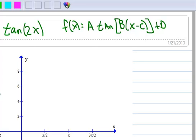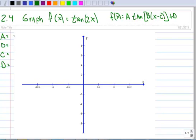The first thing you want to do is identify your A, B, C, and D. So A is 1 in this case, B is 2, there's no phase shift, and no vertical shift.